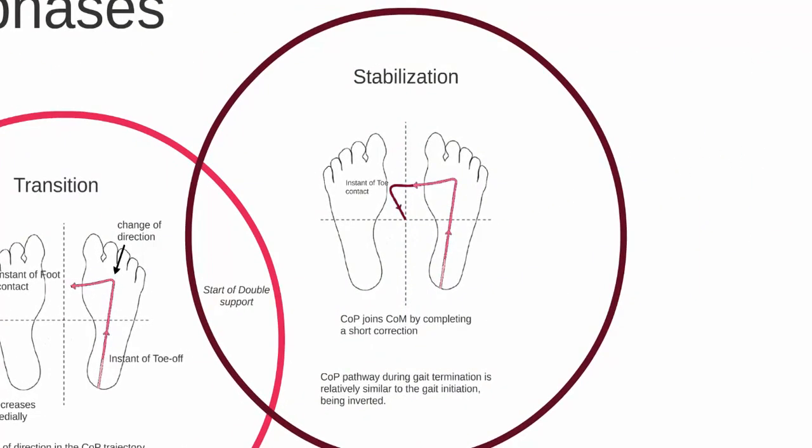Once double support is established, we are then in the stabilization phase. The center of pressure joins the center of mass by completing a short posterior and medial correction. You will notice that the pathway of the center of pressure during gait termination is relatively similar to the gait initiation, however inverted.